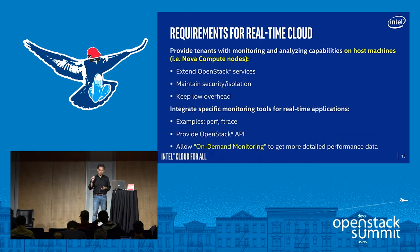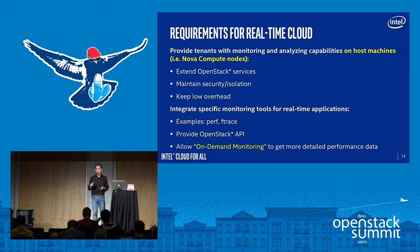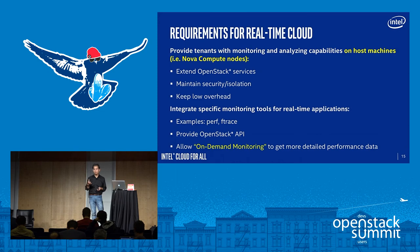To monitor this, we cannot disturb the system because that can break real-time stuff, so the overhead of monitoring must be very low. The other thing is we want to provide standard or popular real-time debugging tools like perf or ftrace in OpenStack. And then the other thing is on-demand — because ftrace, depending on the events, it's expensive and a heavy workload to provide some types of ftrace data. So that kind of debugging or analysis data must be provided on-demand.